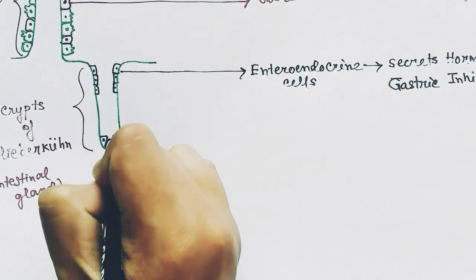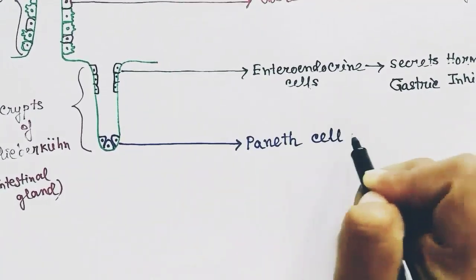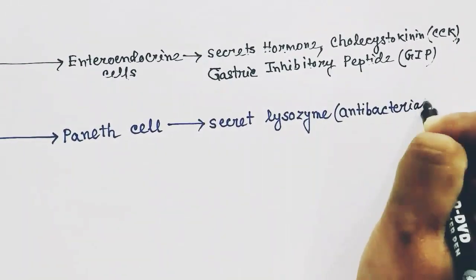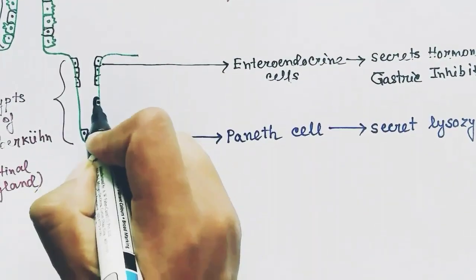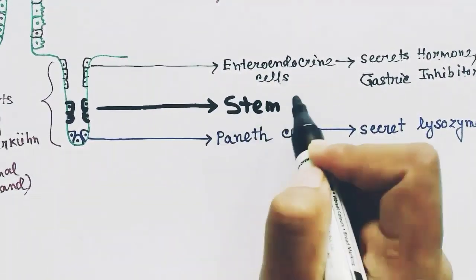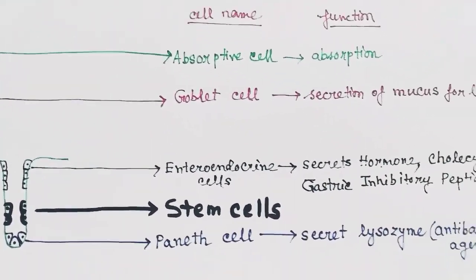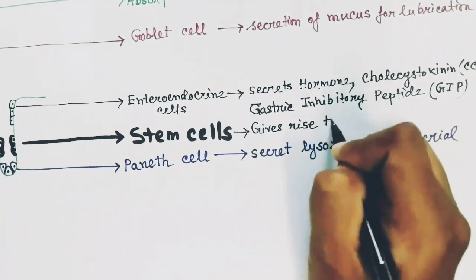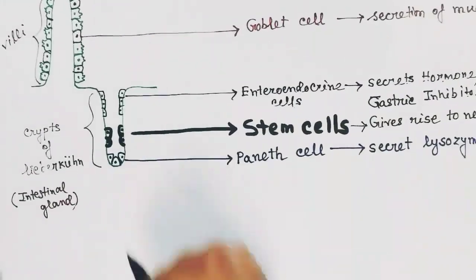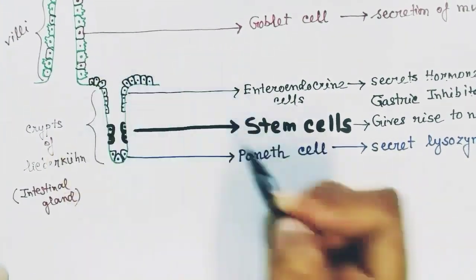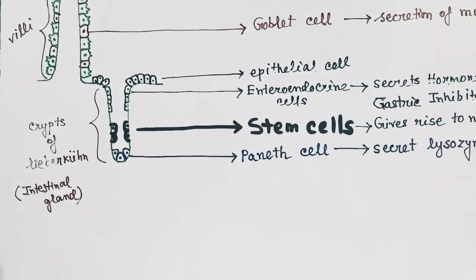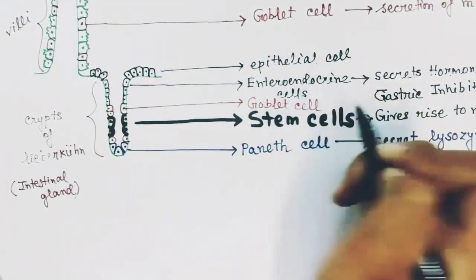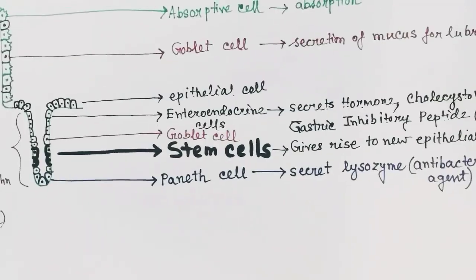The next important cell type in the crypts of Lieberkühn is Paneth cells. Paneth cells are pyramidal in shape and secrete lysozyme, which is an antibacterial agent. Next come the stem cells, which give rise to different kinds of cells, including the epithelial cells situated in the epithelial portion of the intestine. Goblet cells are also present in the intestinal gland for mucous secretion.